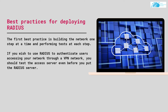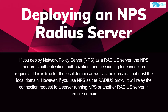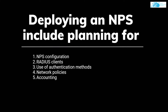The next practice is deploying an NPS RADIUS server. If you deploy a Network Policy Server (NPS) as a RADIUS server, the NPS performs the authentication, authorization, and accounting for connection requests. This is true for the local domain as well as domains that trust the local domain. If you use NPS as a RADIUS proxy, it will relay connection requests to a server running NPS or another RADIUS server in a remote domain. Deploying NPS includes planning for NPS configuration, RADIUS clients, authentication methods, network policies, and accounting.